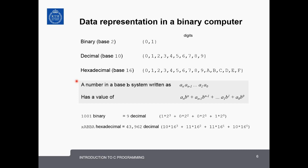It's possible to convert between any of these number systems using the following formulation. A number in base system B written as a_n, a_{n-1}, dot dot dot, all the way down to a_0 has a value of a_n times b to the n plus a_{n-1} times b to the n minus 1, all the way down to a_0 times b to the 0.